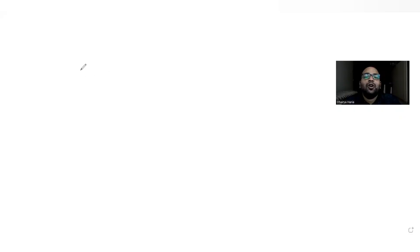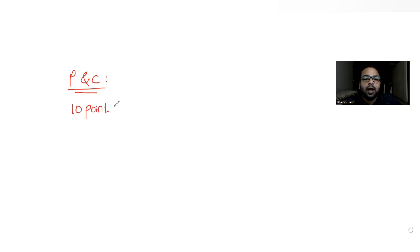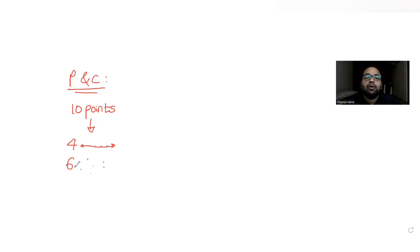Today's question is from the topic of permutations and combinations. We have been told that there are 10 points in a plane, and out of these 10 points, four points are on a straight line — basically those four points are collinear. Apart from these four points, the remaining six points are non-collinear, meaning no two of them lie on the same straight line. The question asks how many triangles can be formed with these 10 points.